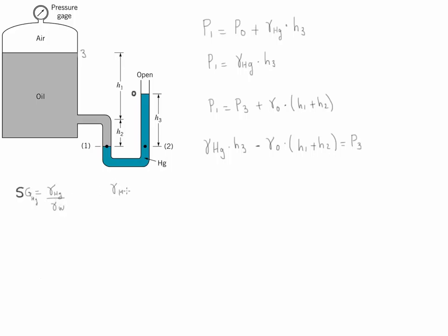Therefore, the gamma of mercury is going to be the specific gravity times the gamma of water. In this case, we're going to use the gamma of water to be 62.4 pounds per cubic feet.